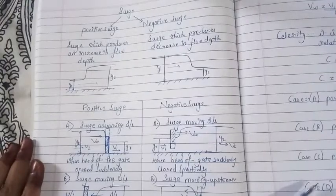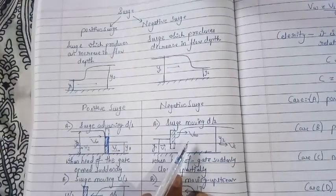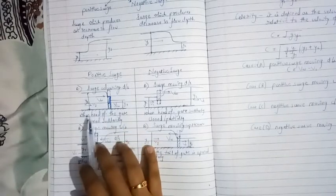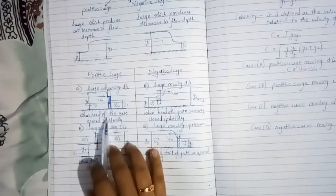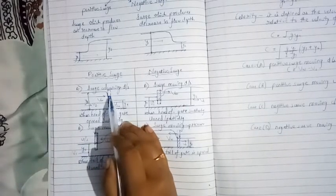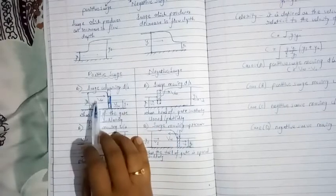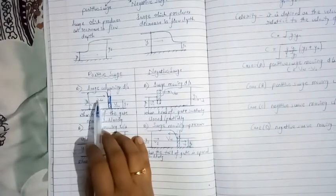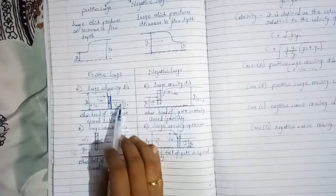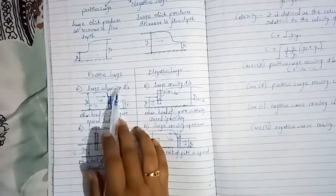Now we will see the cases of positive surge and negative surge. The first case of a positive surge is when the head of the gate opens suddenly. If this is the gate and the head opens suddenly, then the wave velocity vw moves toward the downstream side, hence creating a positive surge advancing downstream.